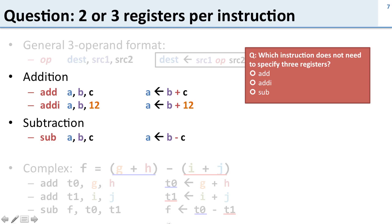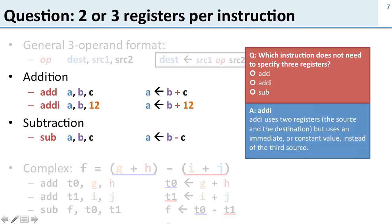So here's a question. Of the instructions I showed you here, which ones do not need to specify three registers? Well take a look at these and what we see is that add i is the one here. So add and subtract both specify two source registers, one here and one here. But add i only specifies one source register and uses this constant as the rest. So add i only specifies two registers and then has this constant or immediate field for the last part.